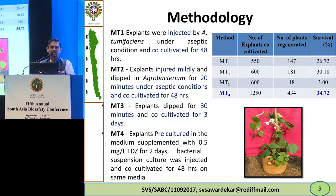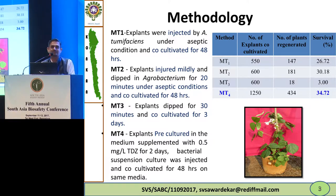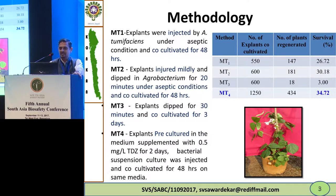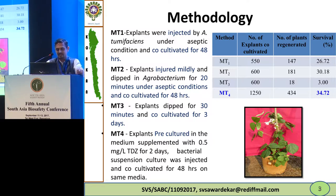The main study is based on the methodology, and we formulated four different methods. In Method 1 (MT1), explants were injected with Agrobacterium tumefaciens under aseptic conditions and co-cultured for 48 hours, giving minimum injury. In Method 2 (MT2), explants were injured mildly and dipped into the Agrobacterium suspension for 20 minutes under aseptic conditions and co-cultured for 48 hours.